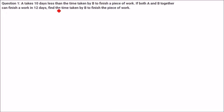A takes 10 days less than the time taken by B to finish a piece of work. If both A and B together can finish the work in 12 days, find the time taken by B to finish the piece of work.